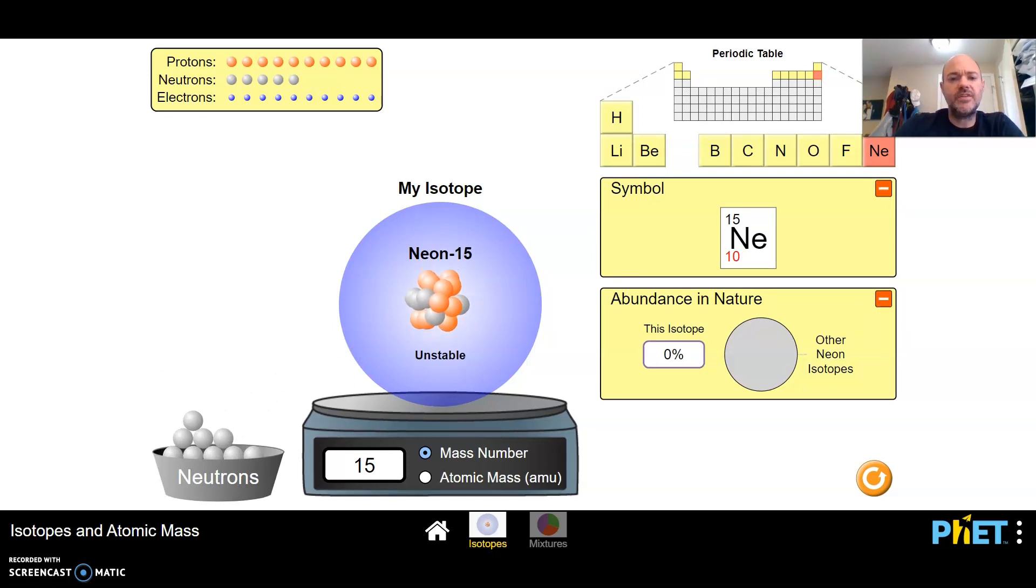All of these isotopes of neon, I mean I can get this all the way down to neon 10 but that's not really going to exist. We need to have a certain number of neutrons for it to actually exist. You'll notice all of these are unstable until we get to neon 20.